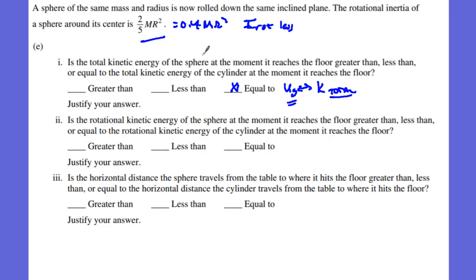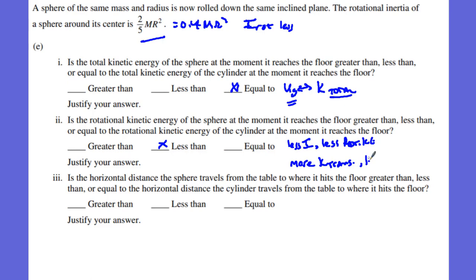The second question asks whether the rotational kinetic energy of the sphere at the floor is greater than, less than, or equal to that of the cylinder. It is less than. Since the sphere has a smaller moment of inertia, there is less rotational kinetic energy. Consequently, there is more translational kinetic energy — the linear speed is faster, but the rotational contribution is smaller, all because of the lower moment of inertia I.